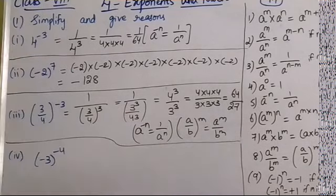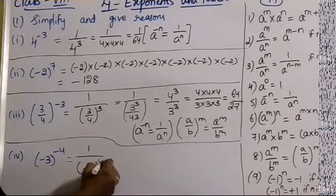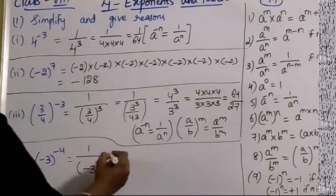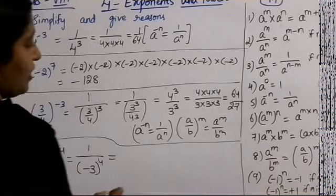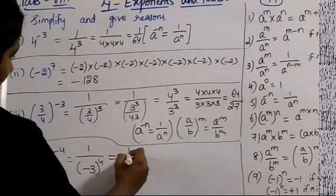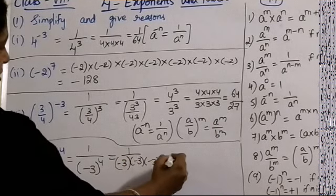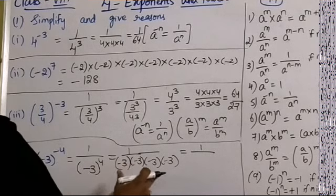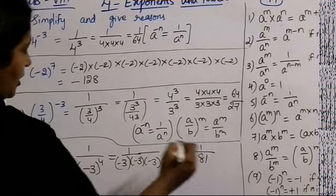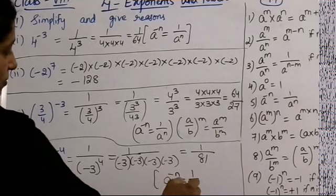Fourth one: (-3) whole to the power of minus 4. The power is negative, so write 1/(-3)⁴. Now the power 4 is an even number, so the result is positive: 1/(3×3×3×3) = 1/81. The answer is 1/81. Law used: a^(-n) = 1/a^n.